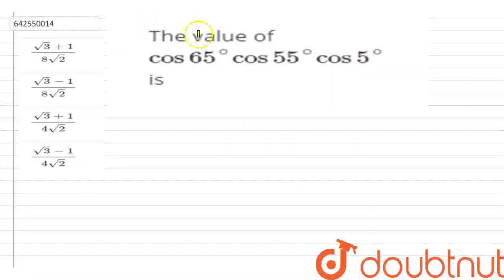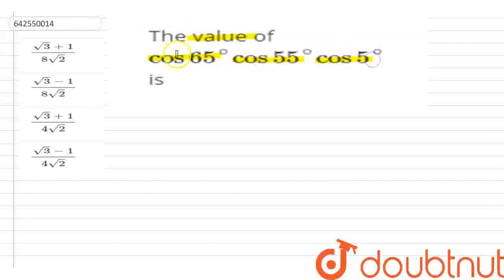In this question, we have to find out the value of cos(65°) × cos(55°) × cos(5°). We have four options: A, B, C, and D.